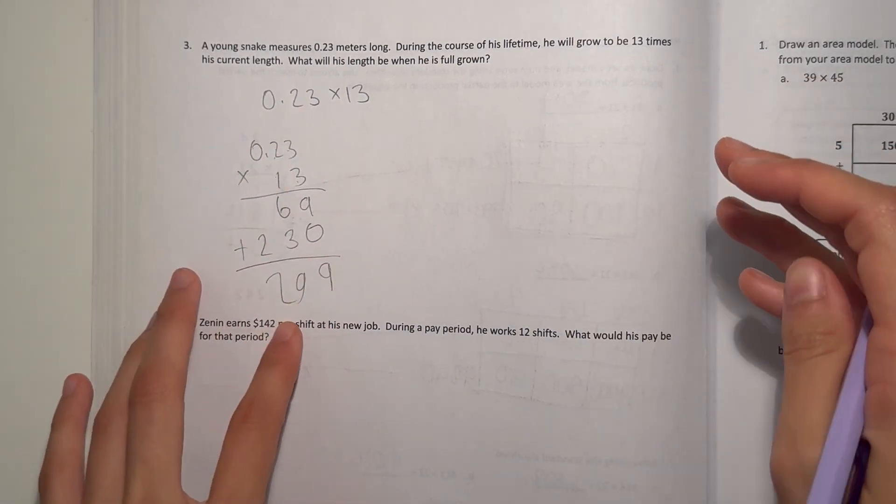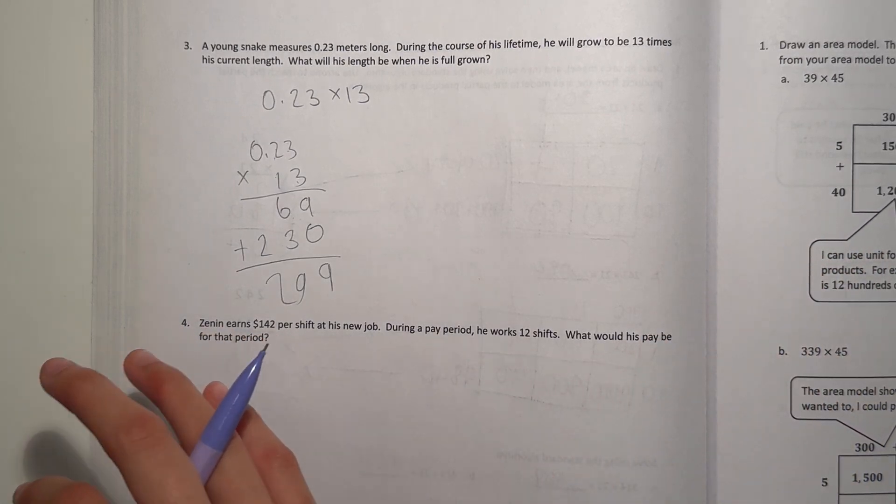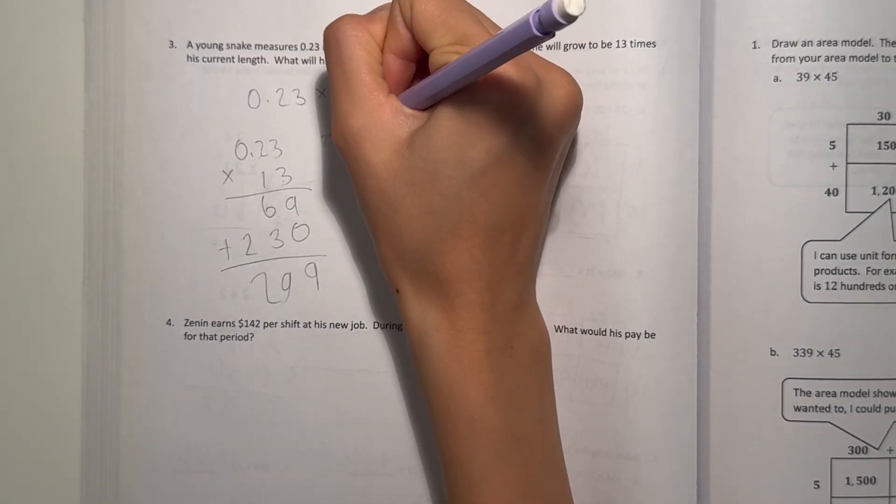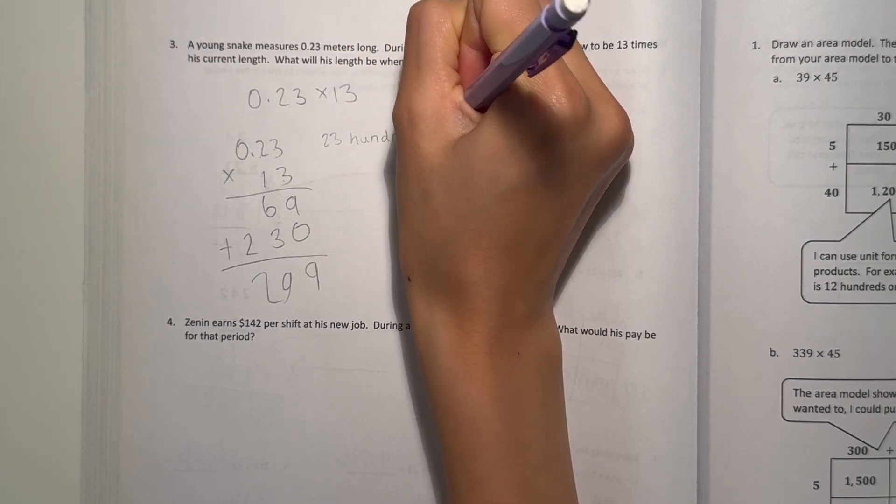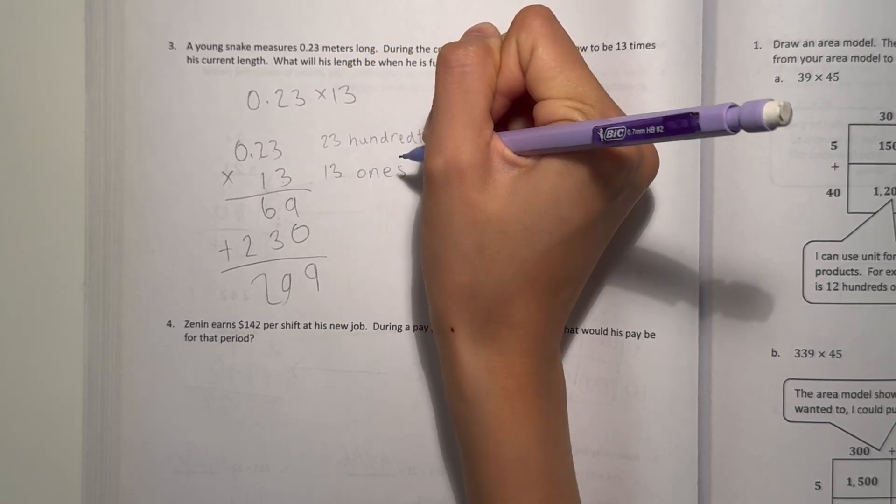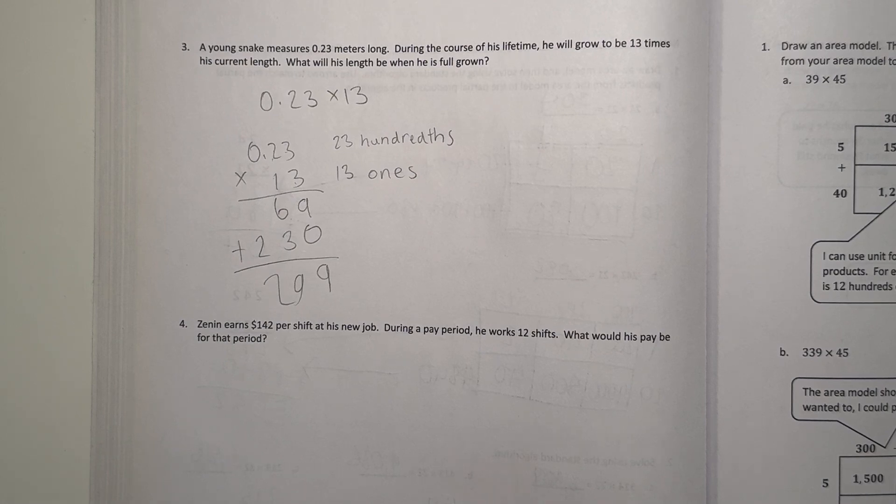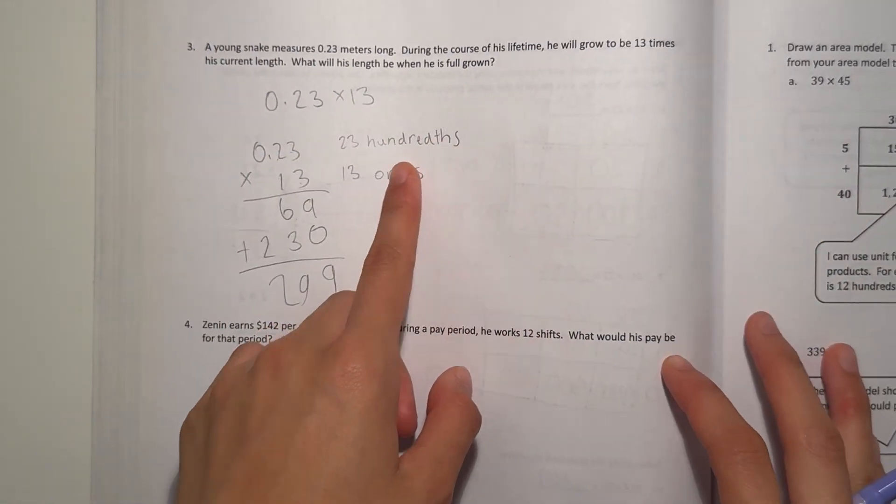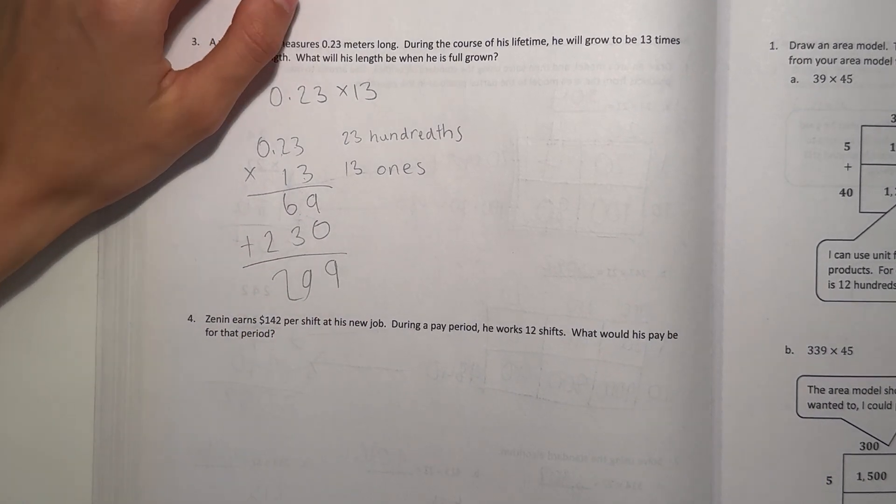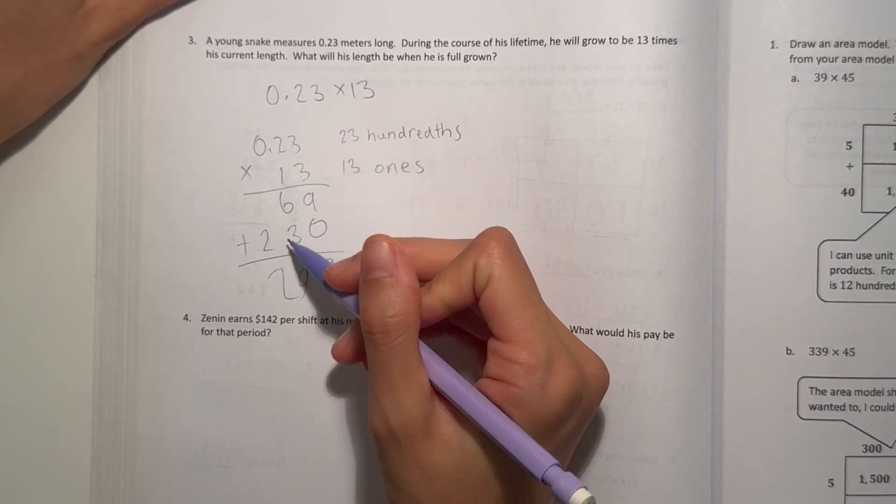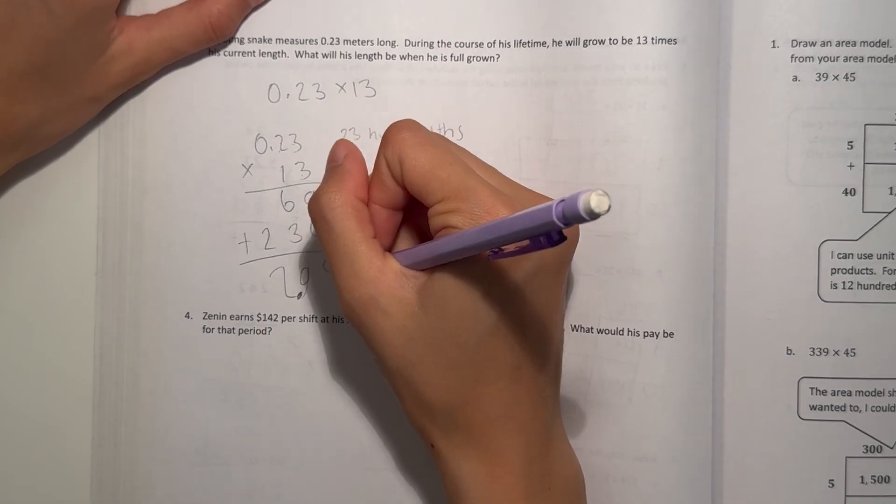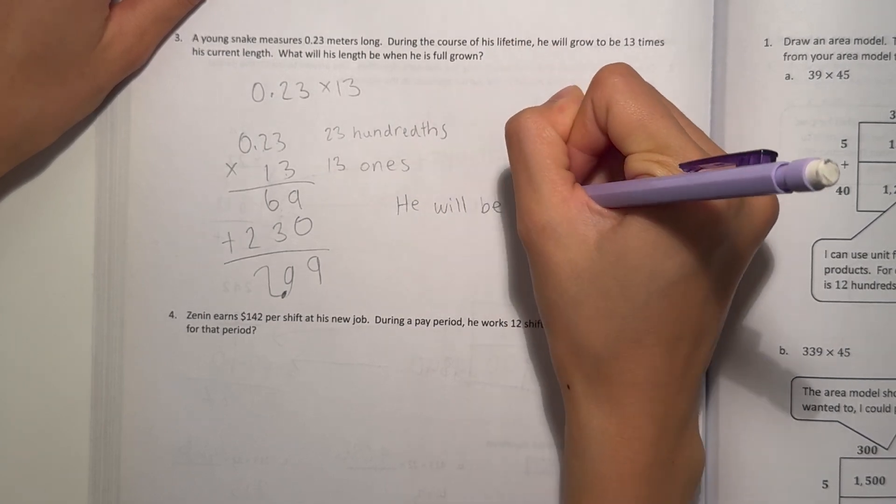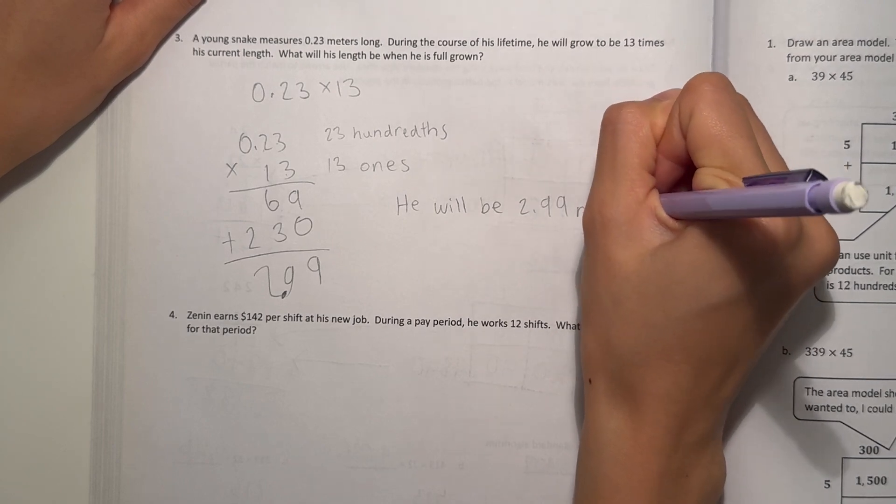But notice how 0.23. So where do we put our decimal point? Well, notice how 0.23 is 23 hundredths. And 13 is 13 ones. So we multiply hundredths by ones. Whatever number we're multiplying by 1, our answer will be that other number. So in this case, hundredths times 1, our answer will be hundredths. Which means 299 hundredths, our decimal point. So 2.99 meters. That means he will be 2.99 meters long.